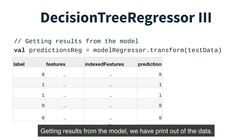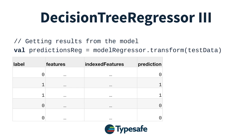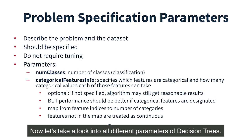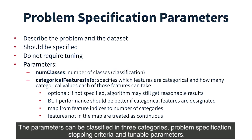Getting results from the model, we have a printout of the data. Now let's take a look at all the different parameters of decision trees. The parameters can be classified in three categories: problem specification, stopping criteria, and tunable parameters.